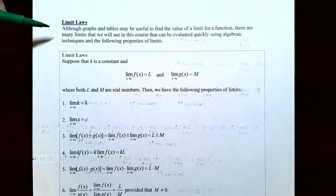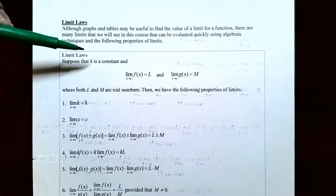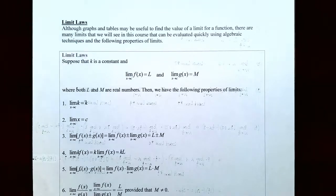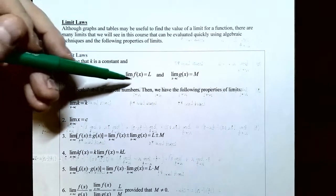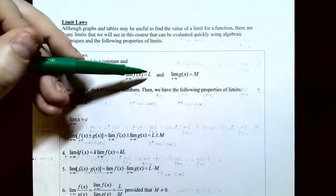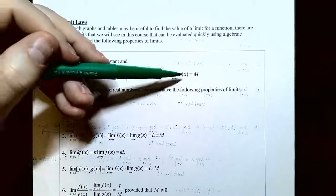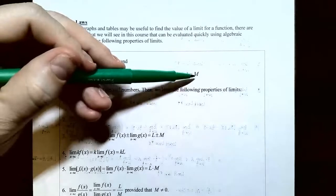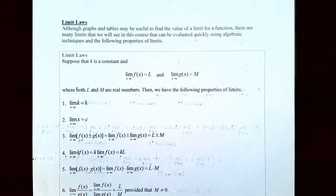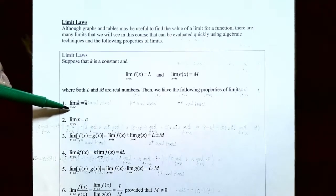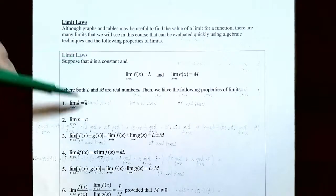Let's start using the limit laws or properties of limits. So even though we can use graphs and tables to find the value of a limit, we can also use algebraic methods. Suppose k is a constant and the limit as x approaches c of f(x) equals L, and the limit as x approaches c of g(x) equals M — those are the given conditions. Then these are called the limit laws, and there are seven of them. You don't need to memorize them, just understand how to use them. Limit law one: the limit as x approaches c of just a constant k is simply k.